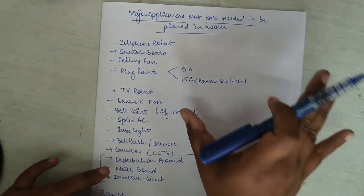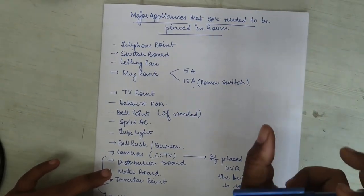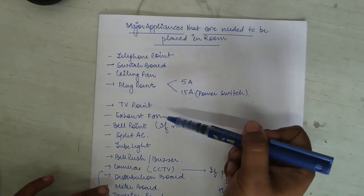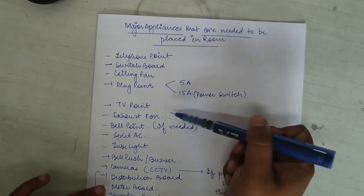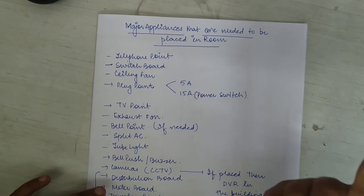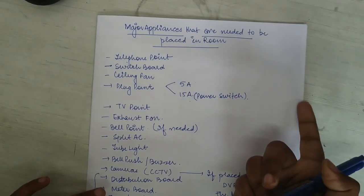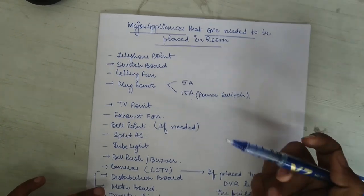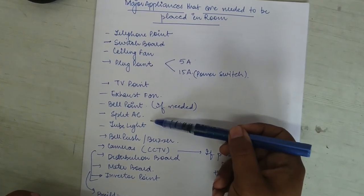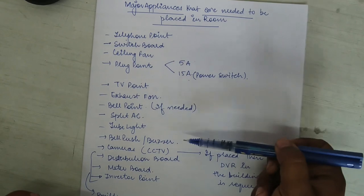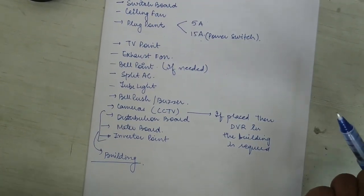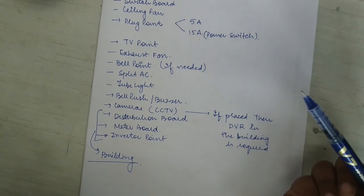In your lecture notes uploaded on your home, the heights of all these are mentioned and their symbols are also mentioned which are used on the embassy. So please refer them before making the sheets. Then add the TV points, exhaust valves, bell points if they are needed. In the case of motels, the bell points will be needed; otherwise, in the residential buildings there will be only one bell point at the entrance. Then split ACs, tube lights, bell push or buzzers wherever it is needed, then the CCTV cameras.